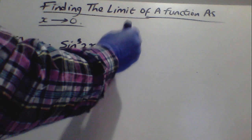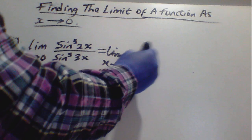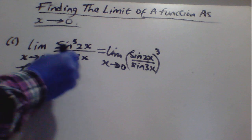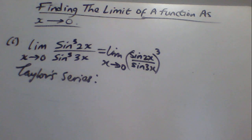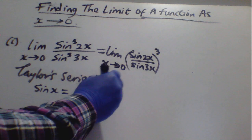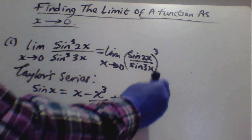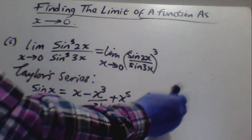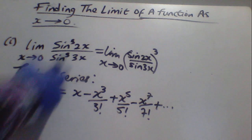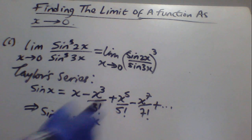Remember that this can be written as lim(x→0) of [sin(2x)/sin(3x)] all to the power of 3. To make it easy for us, when we use the Taylor series for sin(x), we have that sin(x) is equal to x minus x³/3! plus x⁵/5! minus x⁷/7! and so on. This implies that sin(2x) is equal to 2x — it can take that variable.